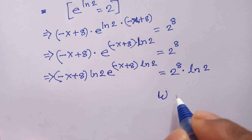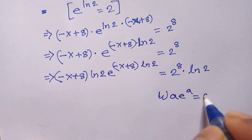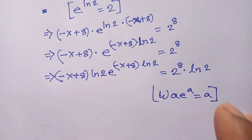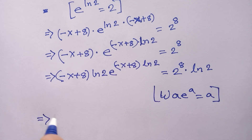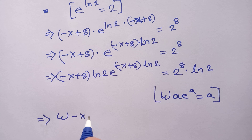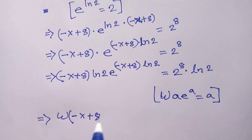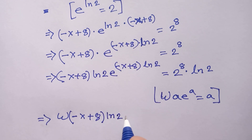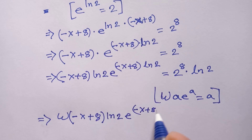We know the Lambert W function property: W(a · e^a) equals a. Applying this W function, we take W of both sides: W((−x + 8) · ln(2) · e^((−x + 8) · ln(2))) equals W(2^8 times ln(2)).